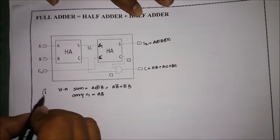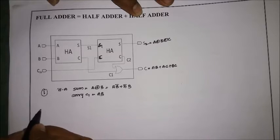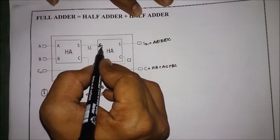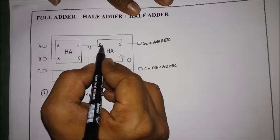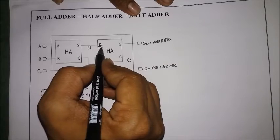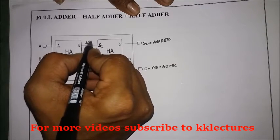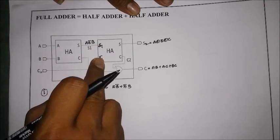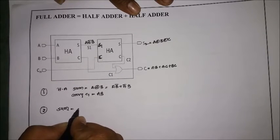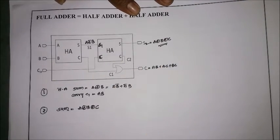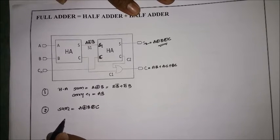For the second half adder, the sum is the combination of S1 and C. Since I gave A and B as inputs to the first half adder, I got A XOR B. Now for the second half adder, I am giving A XOR B as one input — treating it as a single variable — and C as the second variable. So the total sum S2 equals A XOR B XOR C. This is how I get the sum using two half adders.